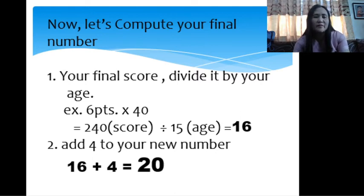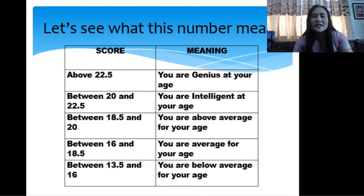So here, let's compute your final score. Your final score divided by your age. For example, you got 7 correct answers multiplied by 40, or the example here I gave is 6. Six points times 40, that is 240, divided by your age, divided by 15. The average age for grade 10 is 15, so the answer is 16. Add to your new number. Add 4 to your new number. Your new number is 16, then add it by 4. That is equal to 20.